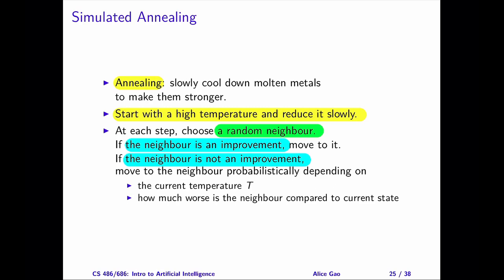So, if the neighbor is not an improvement, we will move to it with some probability. This probability depends on two things. The current temperature, and how much worse the neighbor is compared to the current state.